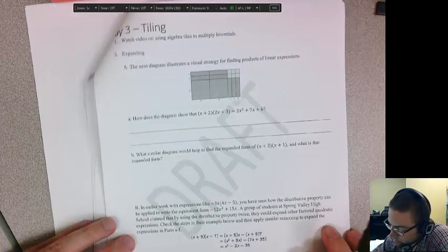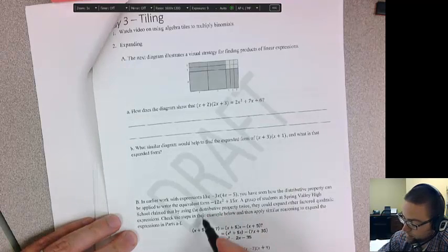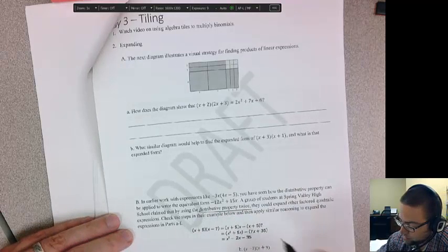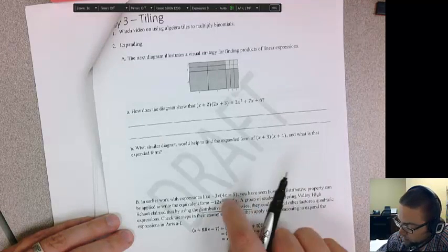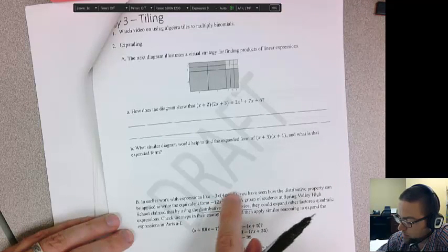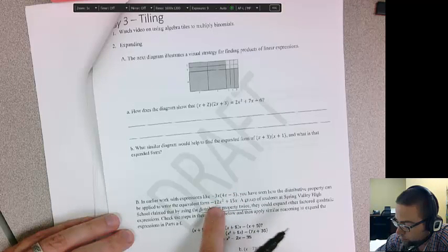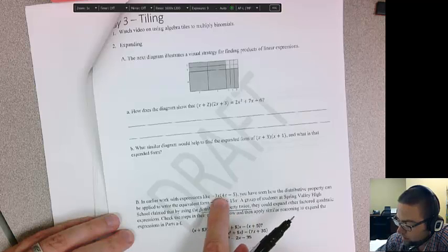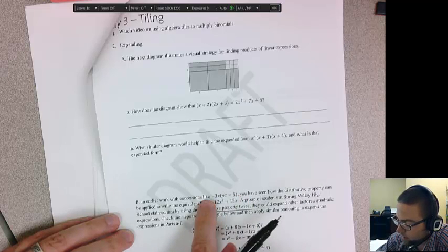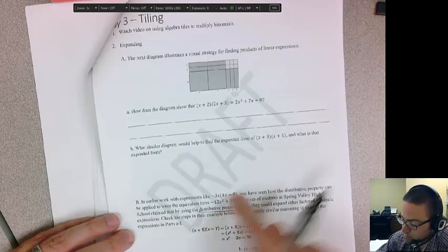And then we come to this where it talks about using the distributive property twice. The distributive property says that you can multiply what's in front over the addition or subtraction. So negative 3x times 4x is negative 12x squared. Negative 3x times negative 5 would be positive 15x. So this is an equivalent expression to that.